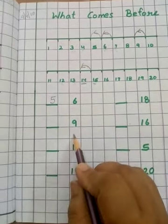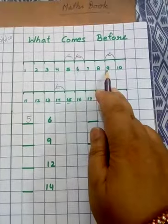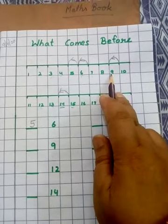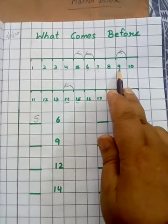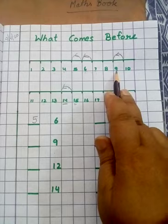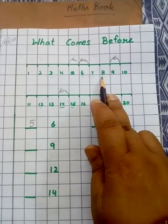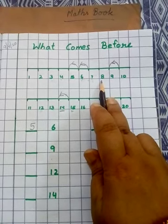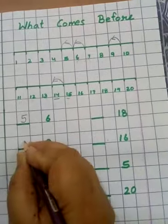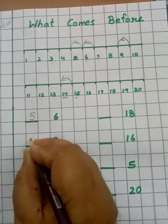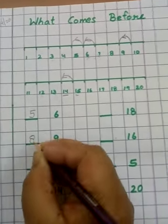Next number is 9. Look at the number line again. Here is 9. When we count in the backward direction, the next number is 8. What comes before 9? It's 8.